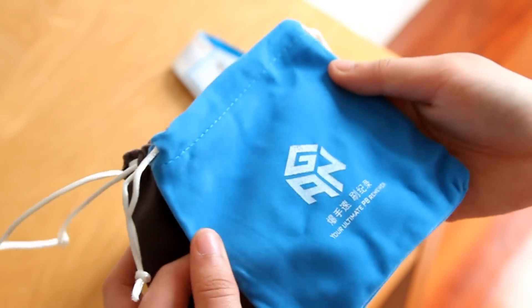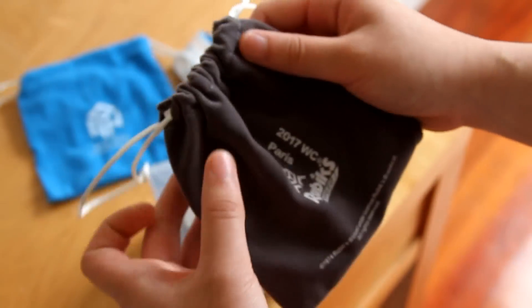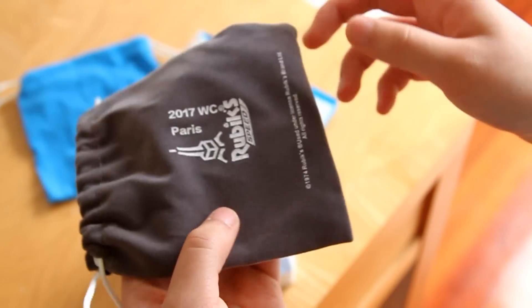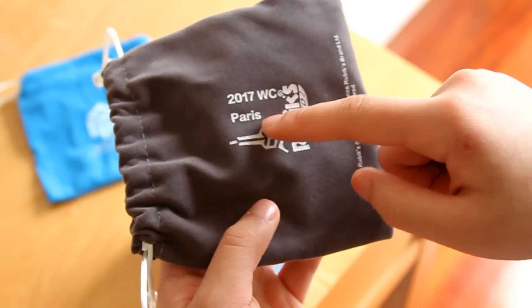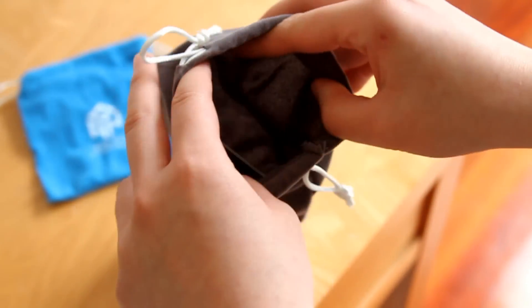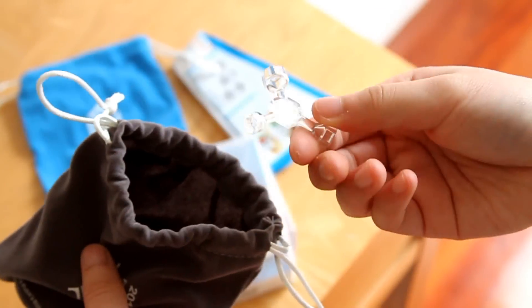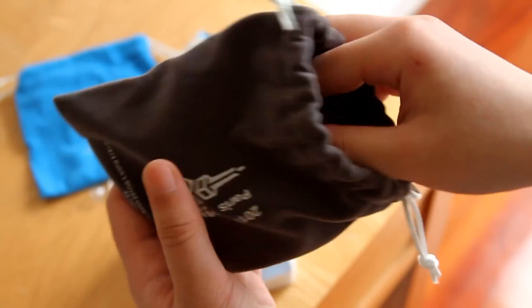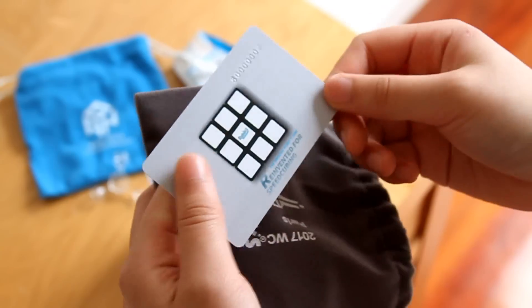This one is just the normal blue Gans velvet bag, and this one is special for the cube. You can see it has 2017 World Championships Paris. Inside we have the tensioning tool for the puzzle and also a numbered card.